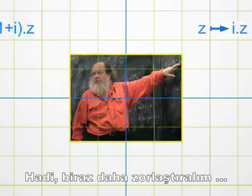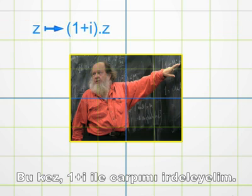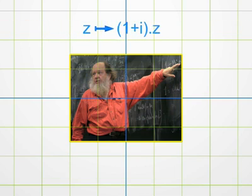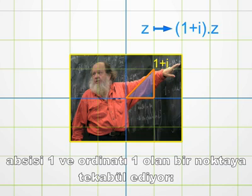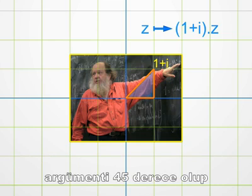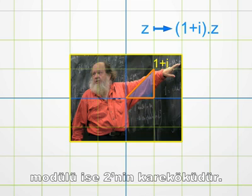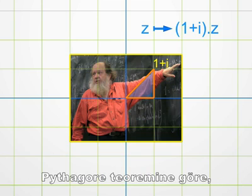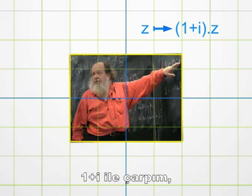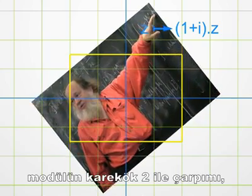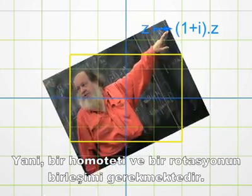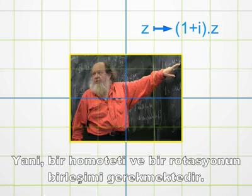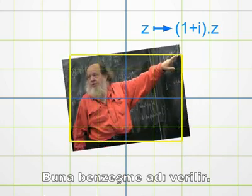A bit more complicated: multiplication by 1 plus i. Look at the complex number 1+i — it corresponds to the point with abscissa 1 and ordinate 1. Its argument is 45 degrees, and its modulus is the square root of 2, using Pythagoras' theorem. Hence, a multiplication by 1+i amounts first to multiplying the modulus by the square root of 2, and then to adding 45 degrees to the argument. In simple words, one has to combine a homothety and a rotation. This is called a similarity.